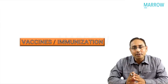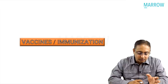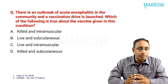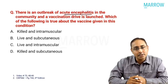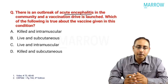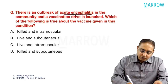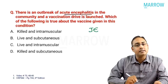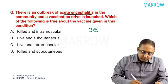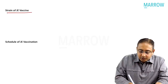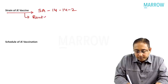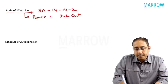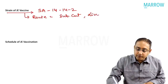Let's take the first topic - vaccines. Question one: there is an outbreak of acute encephalitis in the community and a vaccination drive is launched. Which of the following is true about the vaccine? We are talking of the Japanese encephalitis virus vaccine. Key MCQ points: What is the strain? It is SA 14-14-2. What is the route of administration? It is a subcutaneous vaccine. It is a live vaccine.